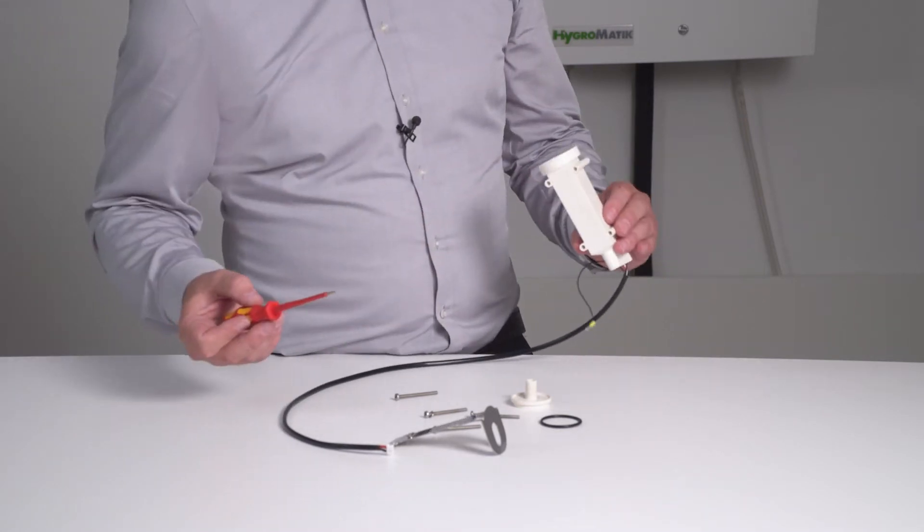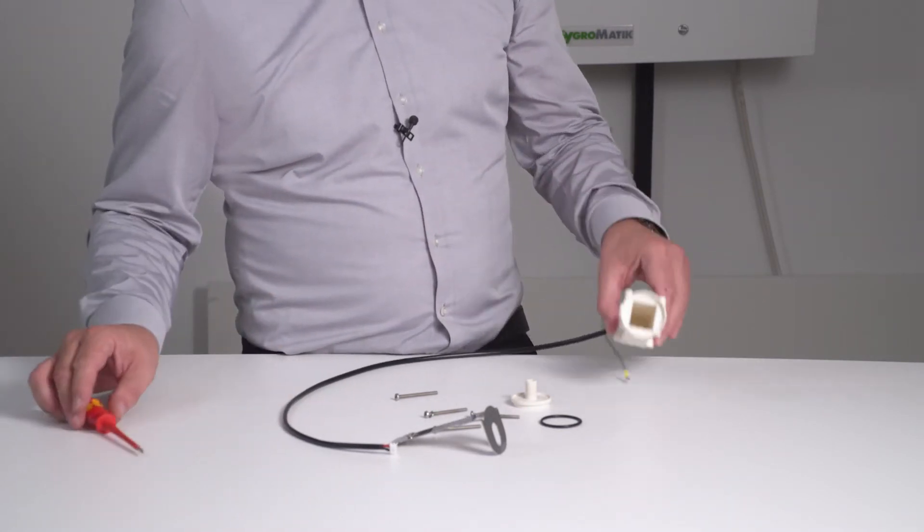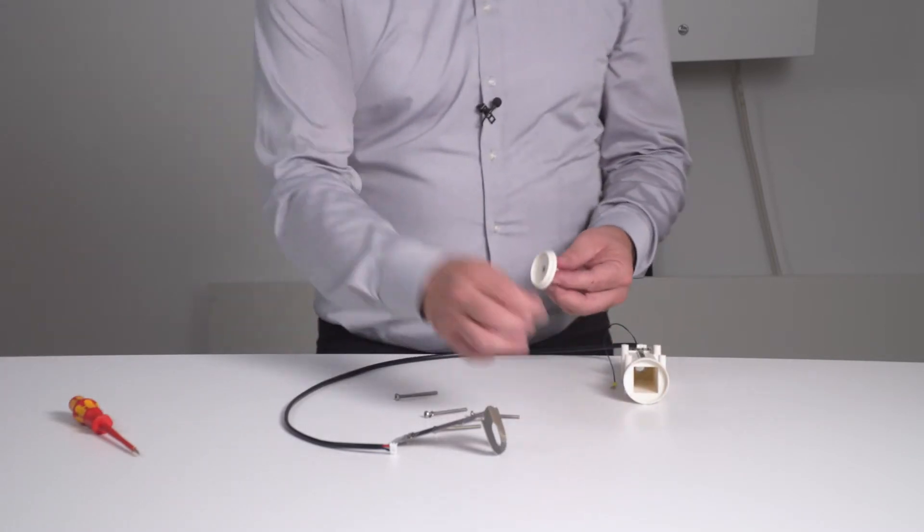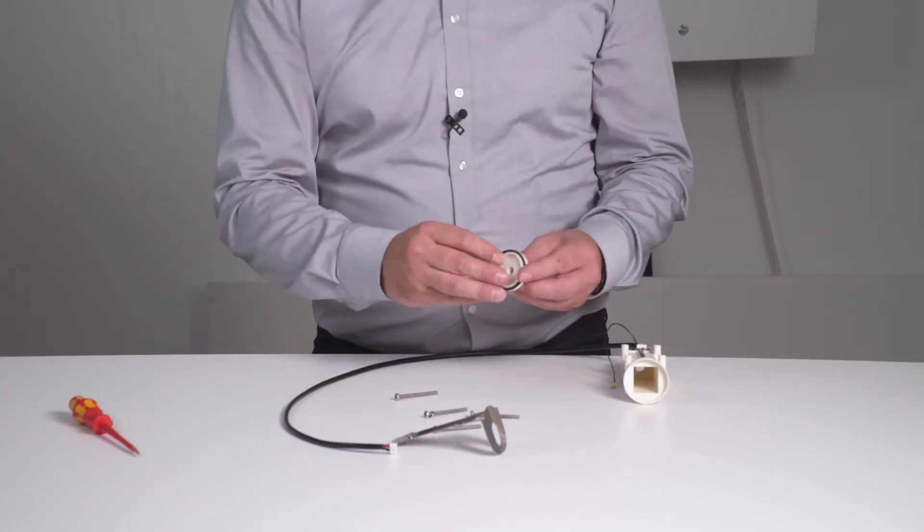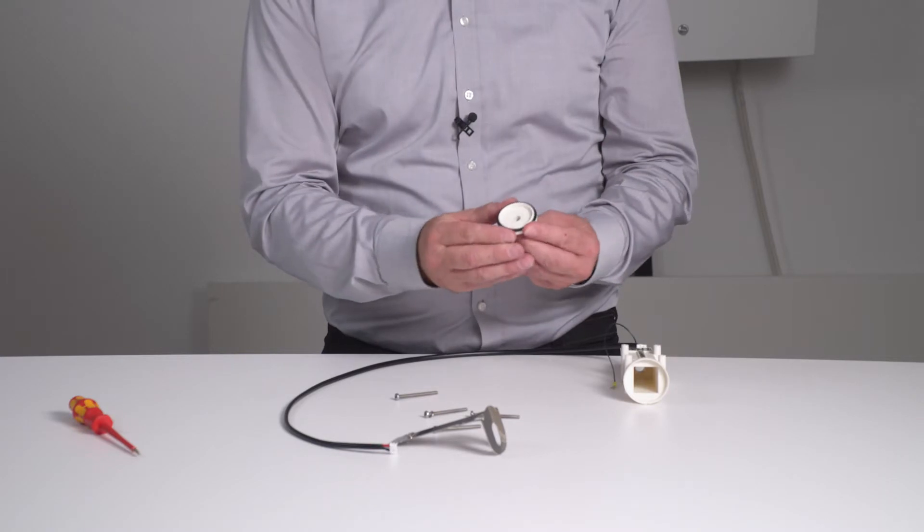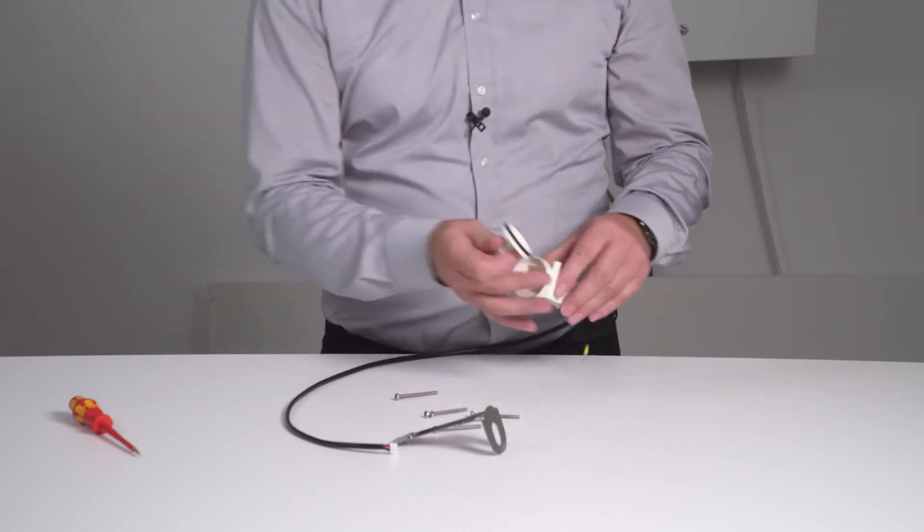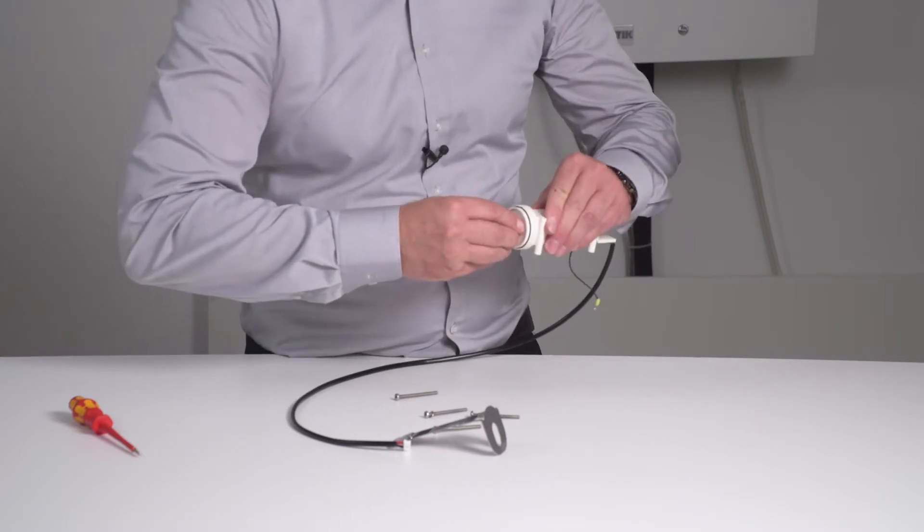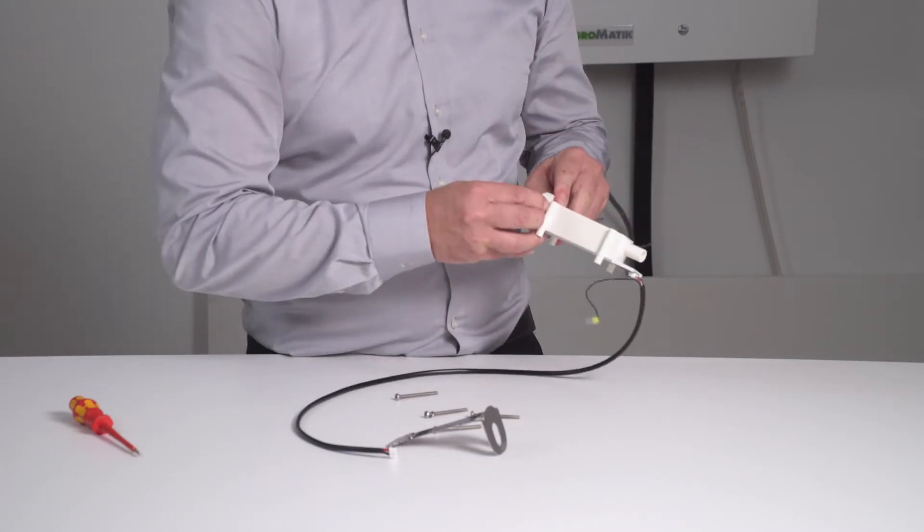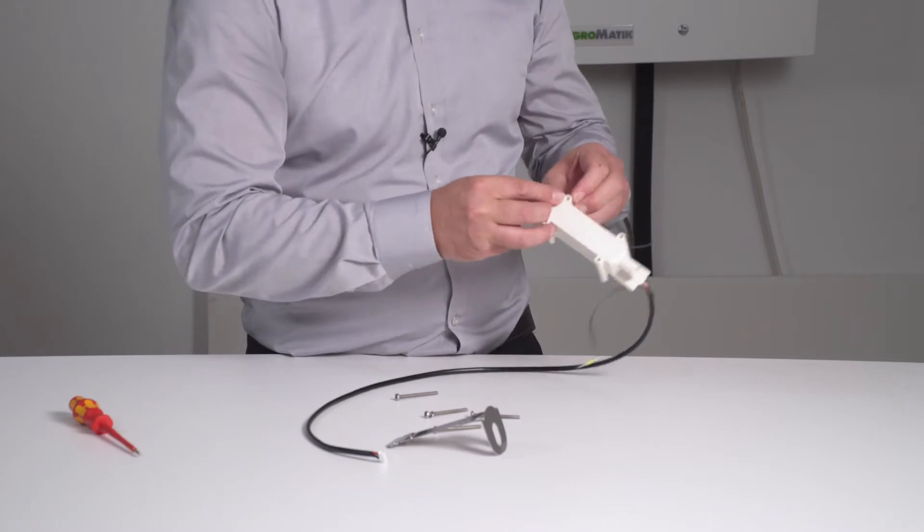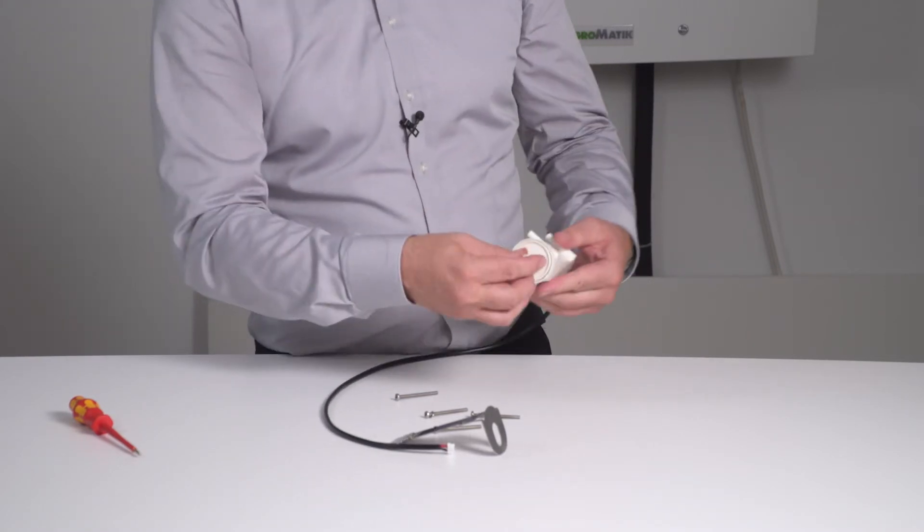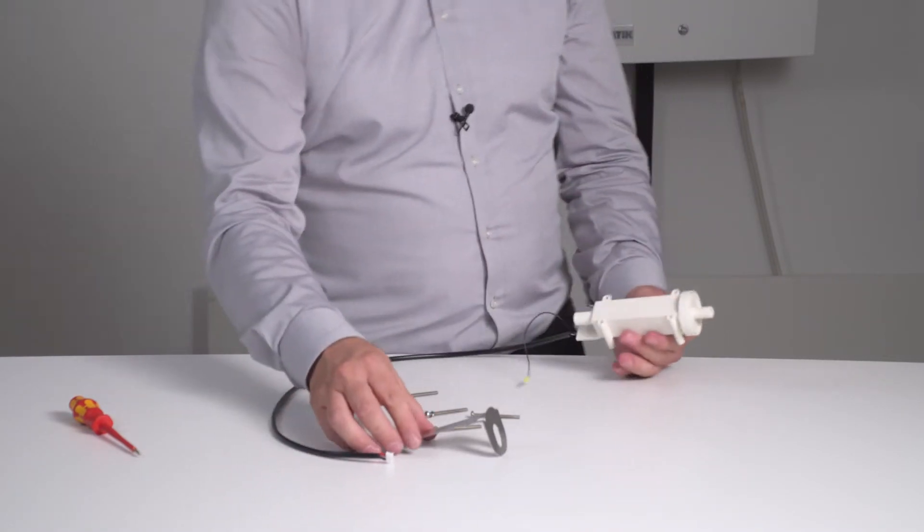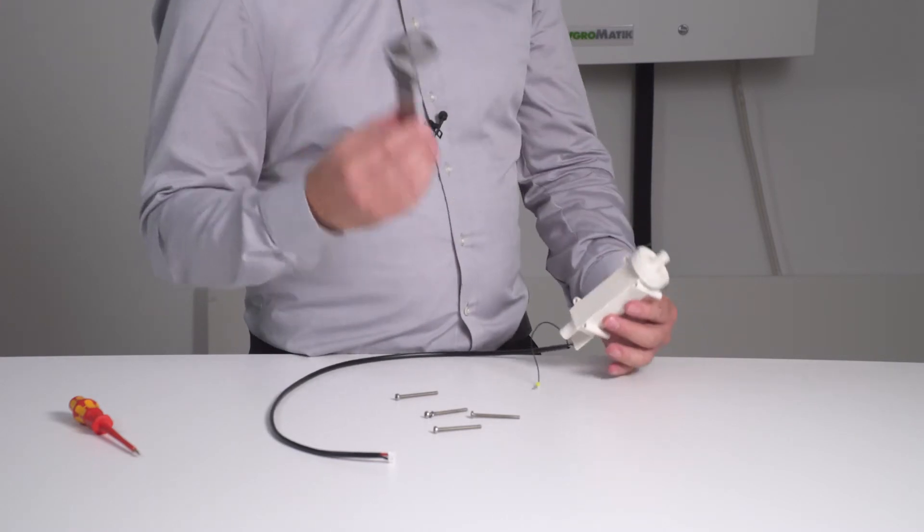Also, please scratch around the connection. Then take a new O-ring and please put it on the lid here and close the container again. And then please make sure to put the shielding plate back on again.